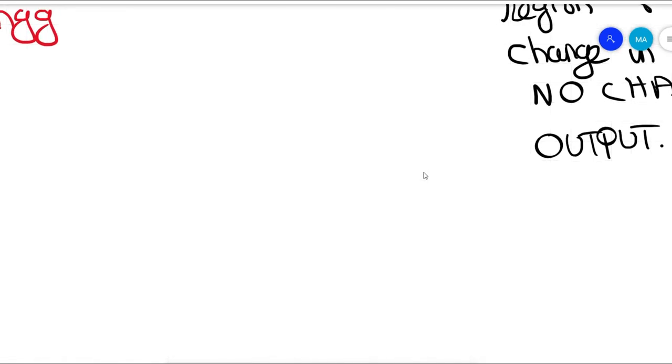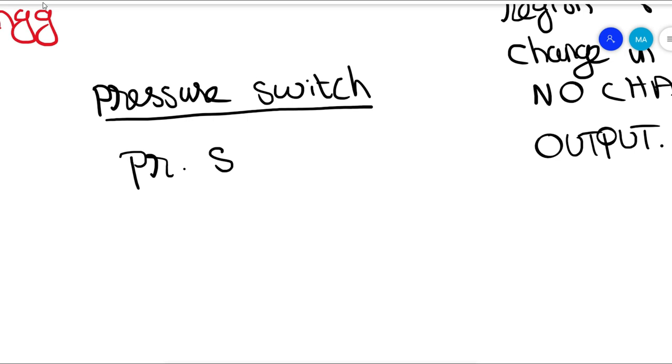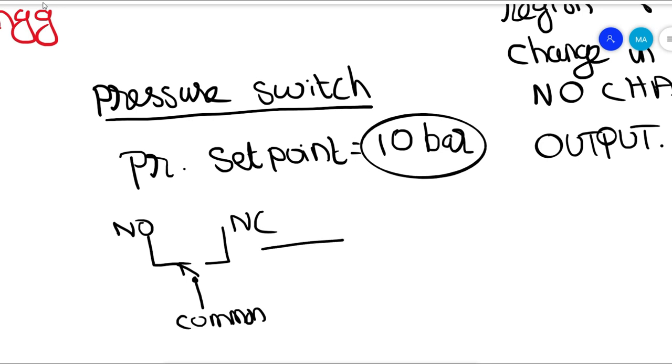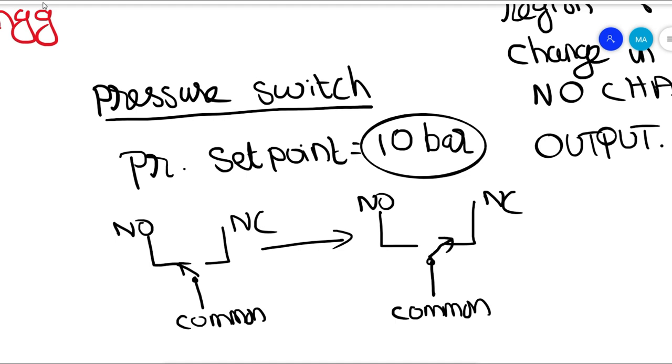Before that let's see how does a pressure switch work. So in a pressure switch, you set pressure at 10 bar. In normal condition a pressure switch is in NO contact, that is basically a normally open contact. When the process pressure increases and achieves 10 bar pressure, the pressure switch will actuate by changing the contact to normally close contact, NC contact.